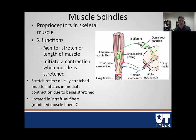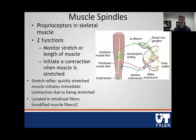The muscle spindle has another name—we'll call it an intrafusal muscle fiber—because within your whole muscle, the muscle spindle actually sits in the middle between all of your typical contracting muscle fibers. The opposite would be an extrafusal fiber, which is just your normal muscle fibers doing the contracting. The intrafusal fiber—the muscle spindle—lays in parallel right in between the skeletal muscle itself, hence the name intrafusal fiber.